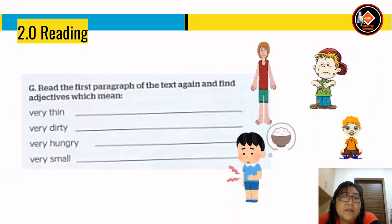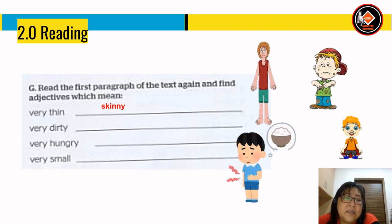Read the first paragraph of the text again and find adjectives which mean: very thin = skinny; very dirty = filthy; very hungry = starving; very small = tiny.